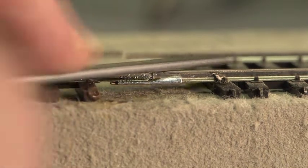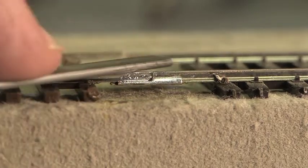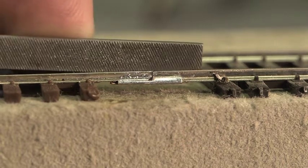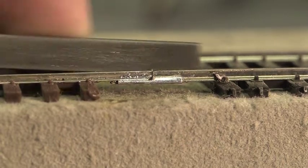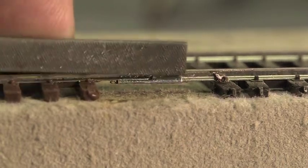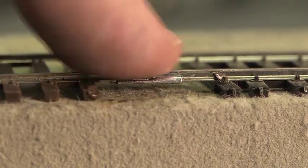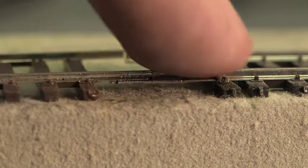You can come in then with a flat file, and then of course come in on the inside and file just a little. Knock down any solder or anything that might have been in there. That's a pretty nice little joint.